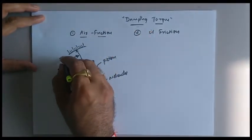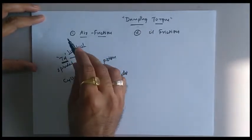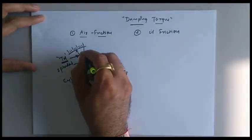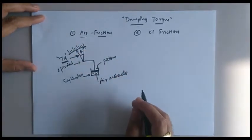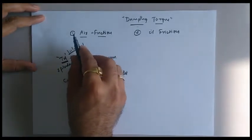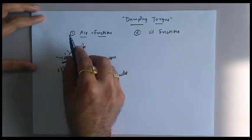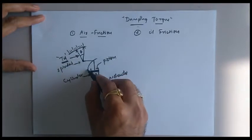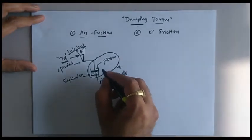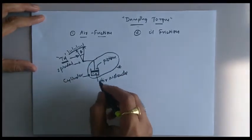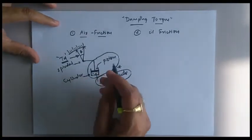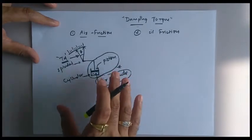Suppose we have a deflection torque acting on this pointer in a particular direction. Because of this, the pointer will try to move from its initial position, creating some deflection theta as an output. Due to the inertia of this system, the pointer will try to make some oscillations with respect to its final value. To reduce those oscillations, the required amount of damping torque is provided via this mechanism — that is, with the help of air friction, or by a combination of piston-cylinder with air friction mechanism. This type of mechanism is called the air friction-based damping torque mechanism.